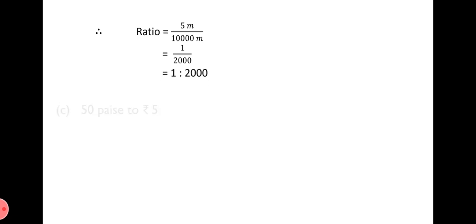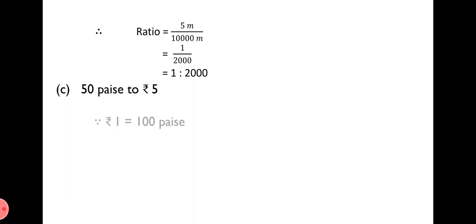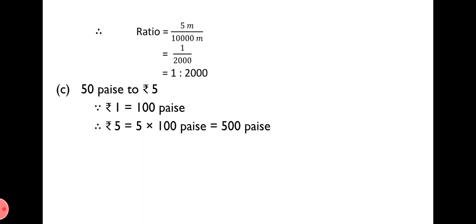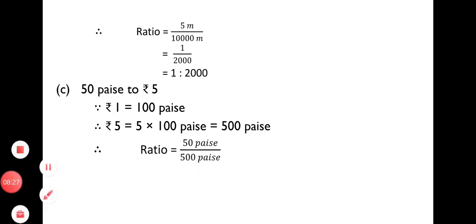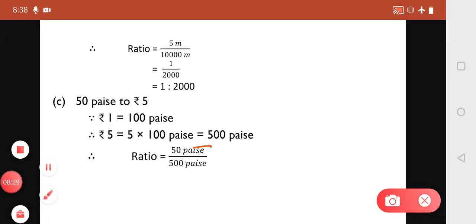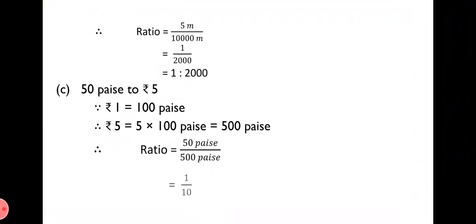Question 1C: 50 paise to Rs. 5. We convert rupees to paise: 1 rupee = 100 paise, so 5 rupees = 500 paise. The required ratio = 50 paise ÷ 500 paise. Cancelling gives 1/10, that is 1:10.